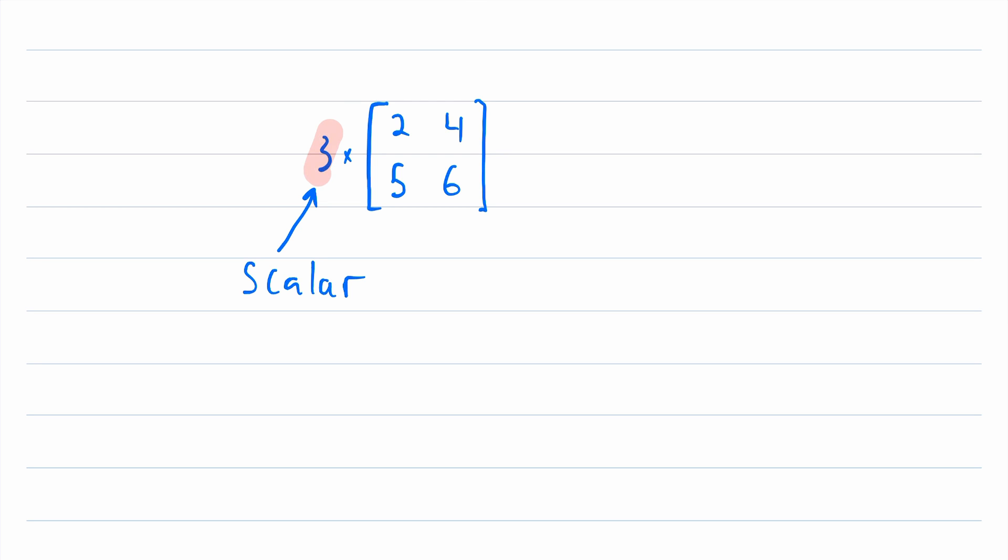We're multiplying a scalar by this matrix. So what do you think is going to happen here when we multiply this matrix by a scalar of three? You might think that the most natural way to define this operation would be to multiply each entry in the matrix by the scalar. And you would be right, that is how we define scalar multiplication.